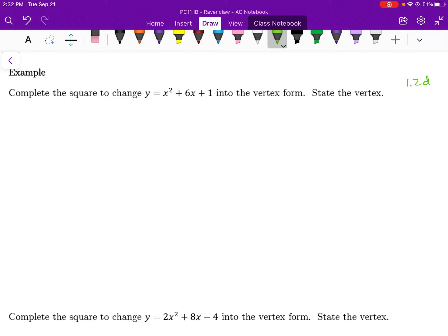Complete the square to change y equals x squared plus 6x plus 1 into vertex form. State the vertex.